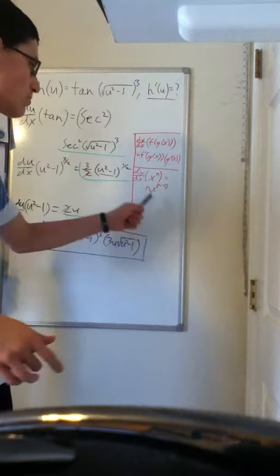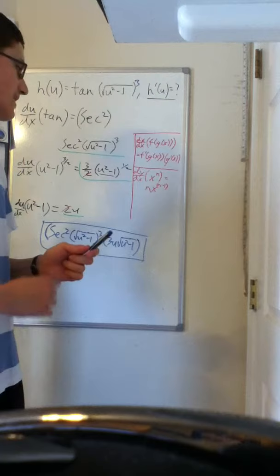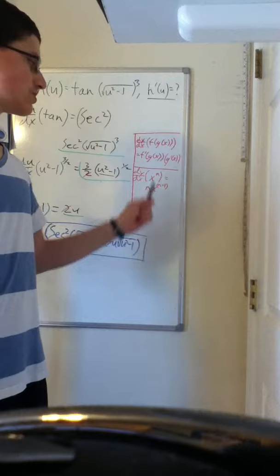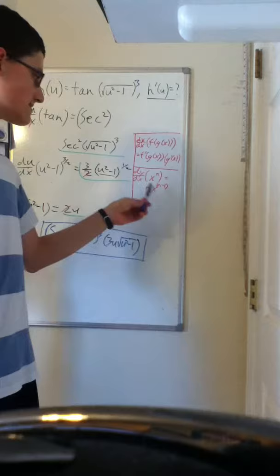Where x to the nth power, the derivative of that is n times x to the power of the original minus one. So x to the nth power, the derivative is n times x to the power of n minus one.